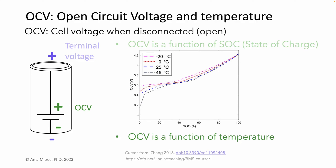OCV is also a function of temperature. Correspondingly, for good state of charge estimation, a BMS should measure cell temperatures. Many battery management systems have only a few temperature sensors for an entire battery pack, and careful mechanical design and characterization guides the locations of these sensors to ensure that the BMS knows the lowest, highest, and typical temperatures across the battery pack.